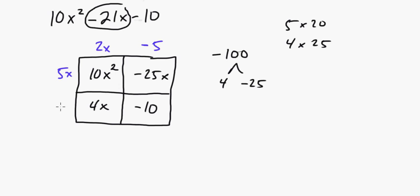And then 2x times what equals 4x? Well that's 2. And then check. -5 × 2 = -10. So we're good. Now they're not all going to equal -10, I just happen to make these the same way. So we have (5x + 2)(2x - 5).